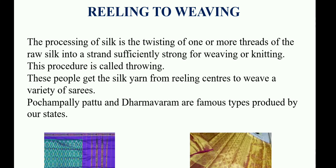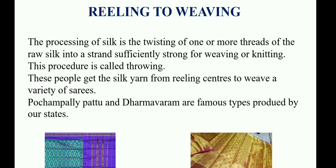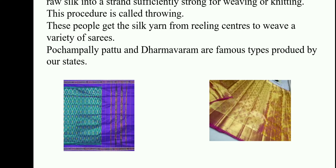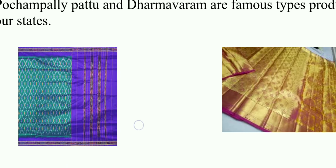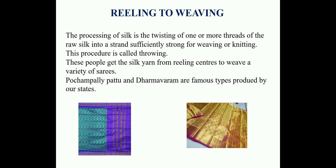Fourth step: reeling to weaving. The processing of silk involves twisting one or more threads of raw silk into a strand sufficiently strong for weaving or knitting — this procedure is called throwing. People obtain silk yarn from the reeling center to weave a variety of saris. Pochampalli pattu and Dharmavaram are famous silk sari types produced by our state.